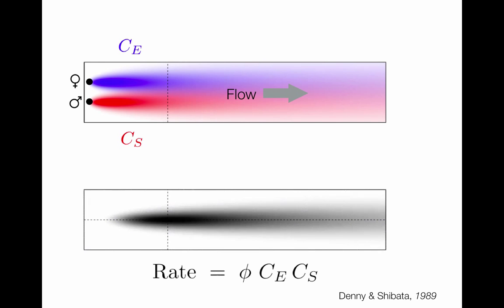So if we actually compute a fertilization rate, typically the fertilization rate will be proportional to the product of the co-occurring local egg and sperm concentrations. So basically this lower image here in grayscale is just what happens if we multiply through this blue concentration field by this red concentration field. And so you can see that this region here turns out to be this region in the fertilization field.